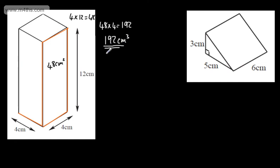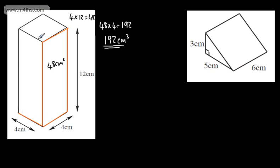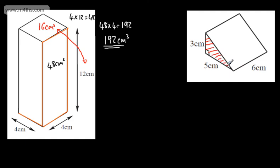The area is squared, the volume is cubed. You could of course work out the top part here — we have a 4 by 4 square on the end, so the top is 16 cm squared, and then we multiply by 12. 16 times 12 is 192 as well. What we have here is a triangular prism, so the constant cross-section is a triangle. If I can work out the area of this triangle, all I need to do is multiply it by the length, and that will give me the volume.